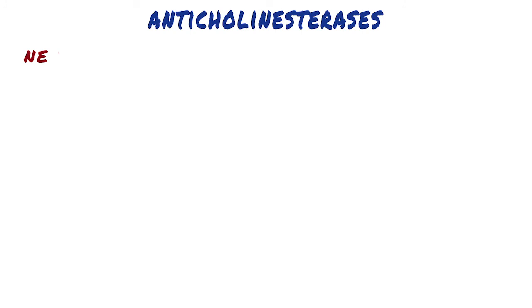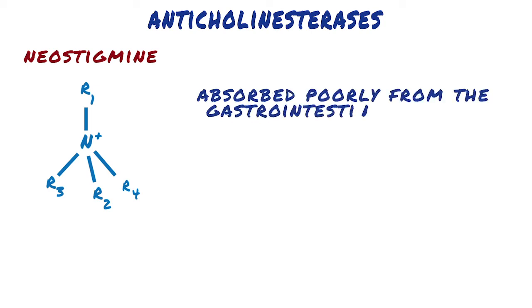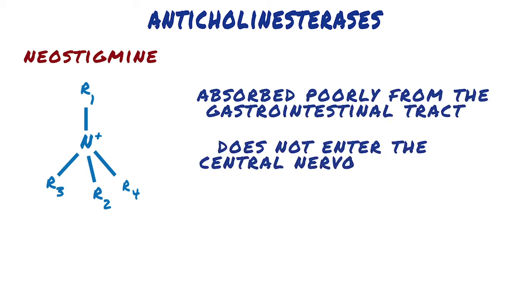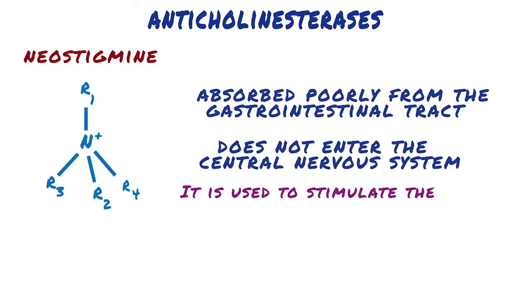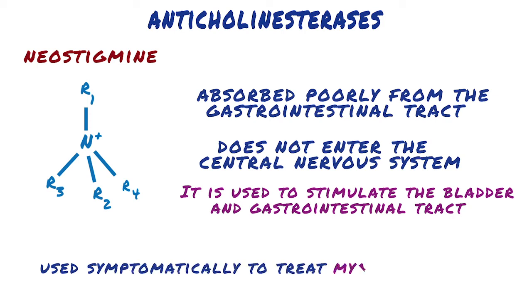It is used to treat glaucoma. Unlike physostigmine, neostigmine has a quaternary nitrogen. Therefore, it is more polar, is absorbed poorly from the gastrointestinal tract, and does not enter the central nervous system. Its effect on skeletal muscle is greater than that of physostigmine. Neostigmine has an intermediate duration of action, usually 30 minutes to 2 hours. It is used to stimulate the bladder and gastrointestinal tract, as an antidote for tubocurarine and other competitive neuromuscular blocking agents. Neostigmine is also used symptomatically to treat myasthenia gravis.